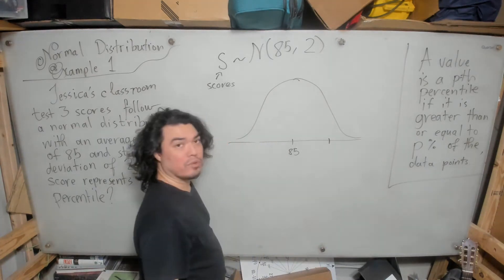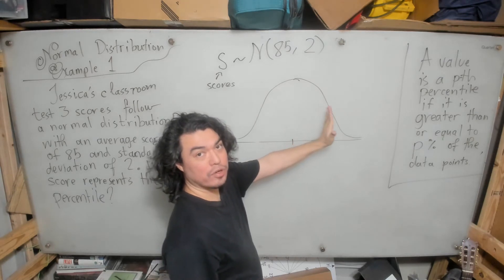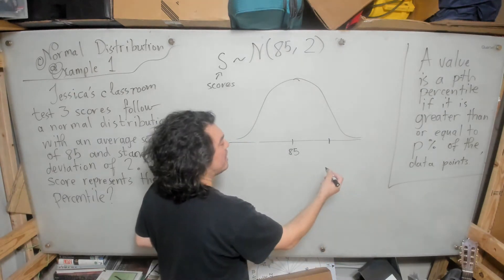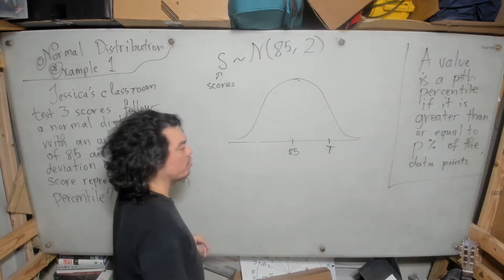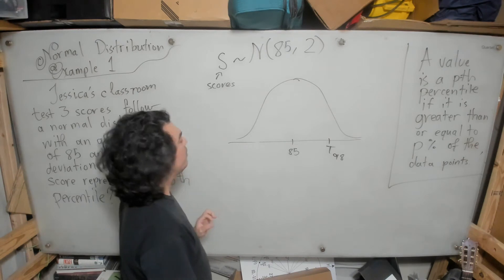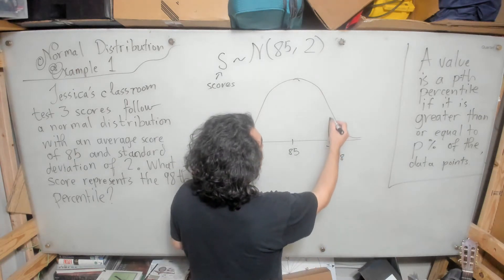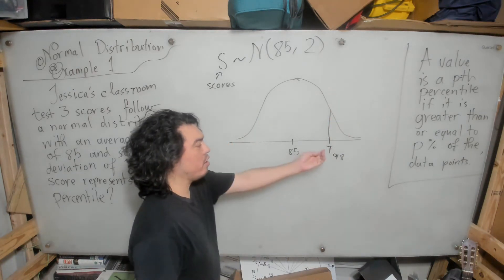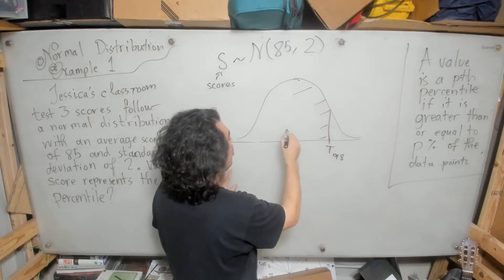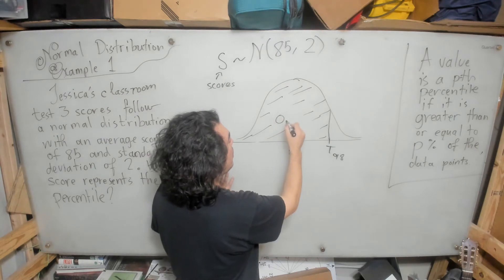The 98th percentile value will probably be further to the right, since the area from the center all the way left is 0.5, and going further right makes it bigger than 0.5. Let's label this value as t₉₈ to represent the 98th percentile of this distribution of test scores. If it is greater than 98 percent of the other values, we can translate that into saying the area shaded to the left must be 0.98.